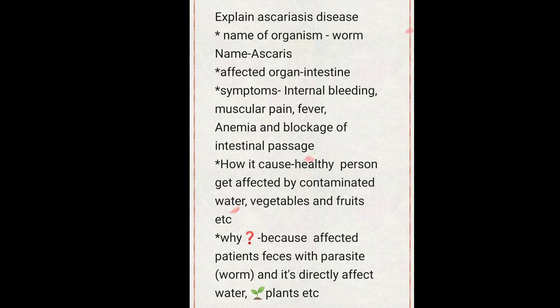A healthy person gets affected when they come into contact with contaminated water, vegetables, and fruit. The worm directly attacks through these sources, because the feces of an affected patient contain the parasite, which contaminates water and plants and then enters a healthy person's body through food or water.